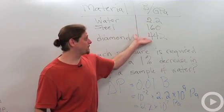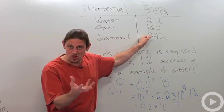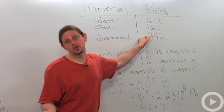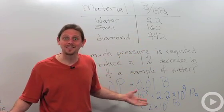The bigger the bulk modulus, the more difficult it is to squeeze those molecules together. So we can see from this table that diamond is very difficult to squeeze together, and so it has a very large bulk modulus. All right, so that's bulk modulus. Enjoy!